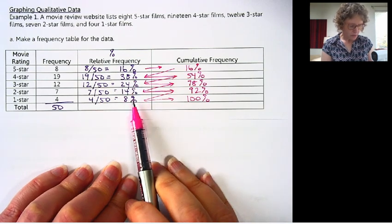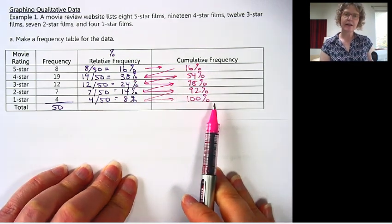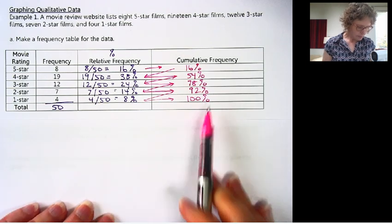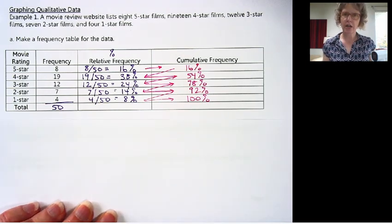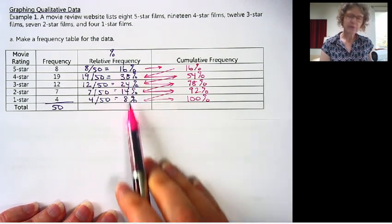We would have to round. And so we might end up with some round off error and this might be not exactly 100%. We would just have to decide based on our context and our data where we wanted to round our frequencies to.